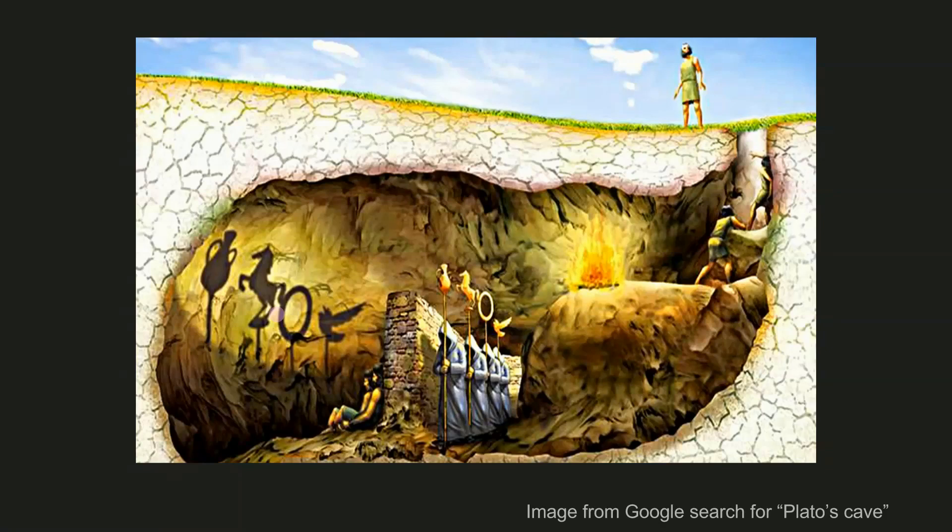The point of this allegory is that we cannot know directly how the universe works. The only way that we can understand nature is by observing the shadows cast in front of us, which correspond to the data that we can measure.